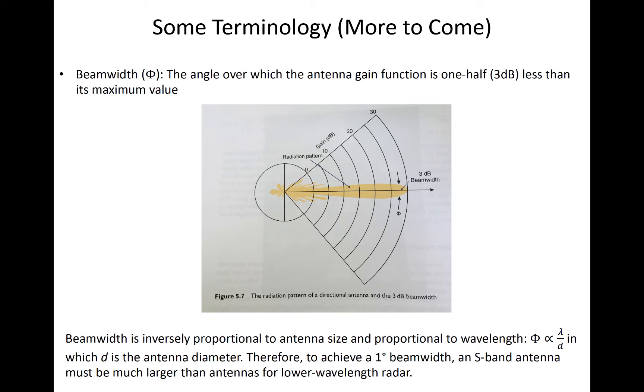As stated before, the beam width decreases as the antenna size increases. The beam width is also proportional to the wavelength. This means that high-frequency radars can operate with much smaller antennas to achieve an acceptable beam width for remote sensing of clouds.